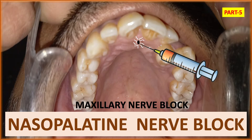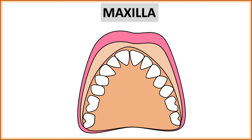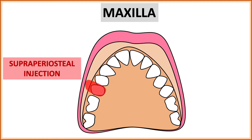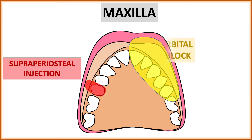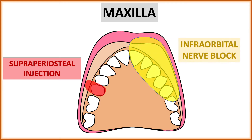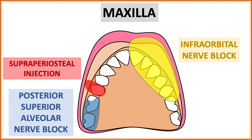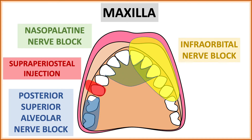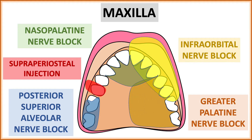Beginning with the nasopalatine nerve block — in the maxilla we have six types of nerve blocks: the supraperiosteal, the infraorbital nerve block, the posterior superior alveolar, the nasopalatine nerve block, and the last one is the greater palatine nerve block. In this video we are going to discuss the nasopalatine nerve block.